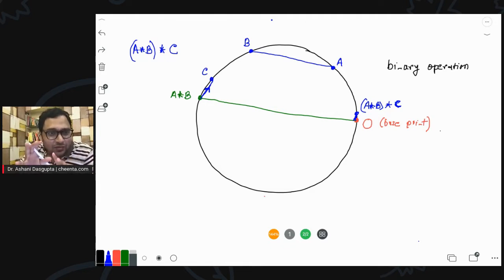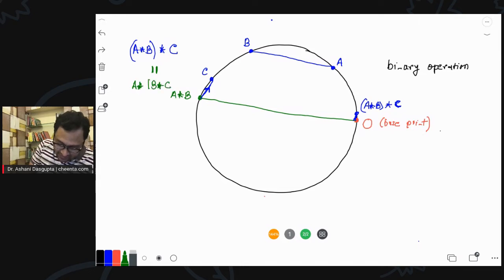Is this rule associative? So, let's check that with this example. Associative means is this equal to A star, B star C. Can I first star B and C and then star B star C with A? Is that possible? Let's see.